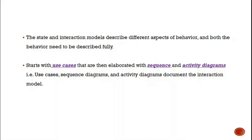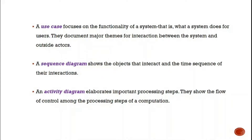The sequence diagram will be covered in upcoming slides. Use cases, sequence diagrams, and activity diagrams document the interaction model. A use case focuses on the functionality of the system, as seen in the mental health patient management system using actors and events. A sequence diagram shows the objects that interact and the time sequence of that interaction. An activity diagram elaborates the important processing steps and shows the flow of control among the processing steps of the computation.